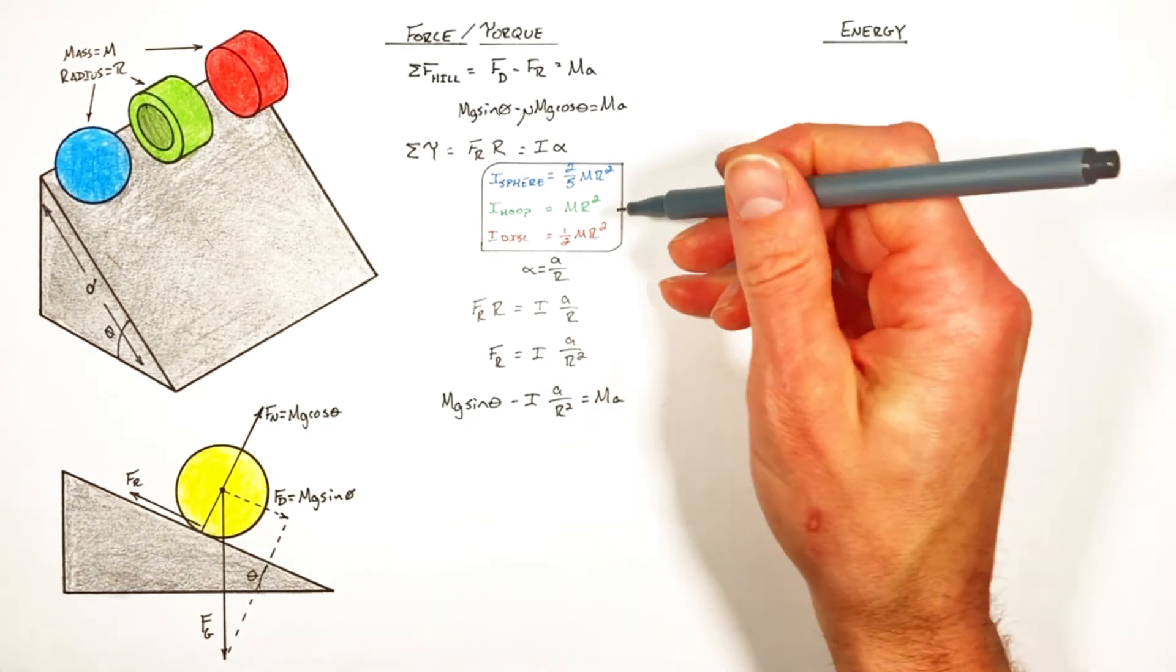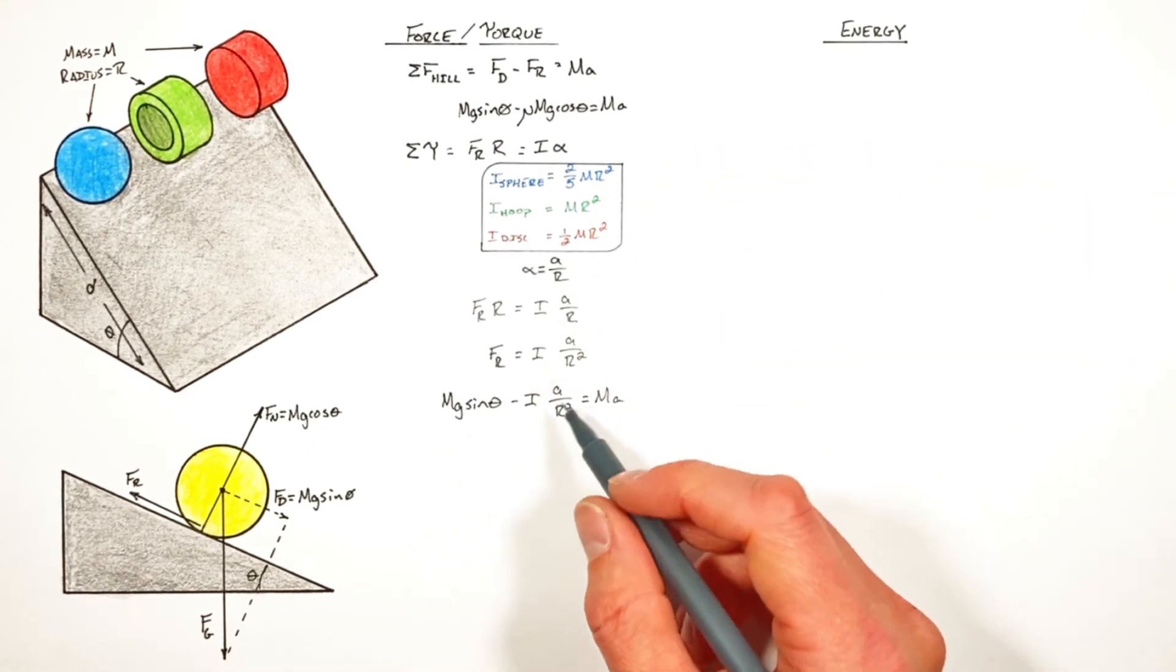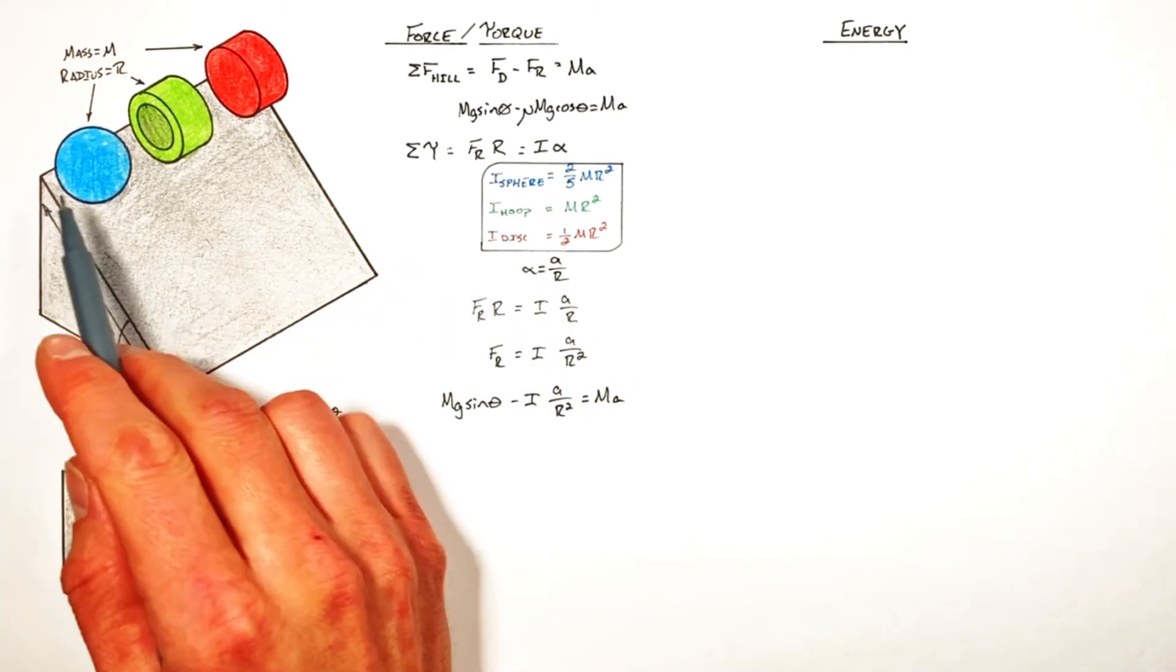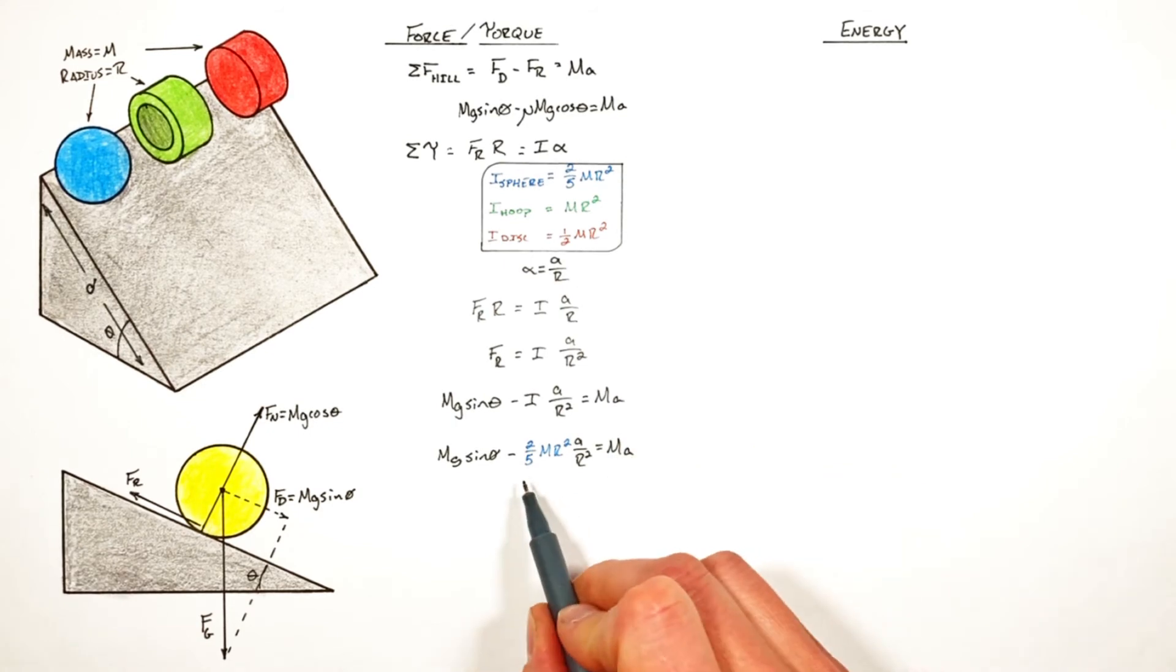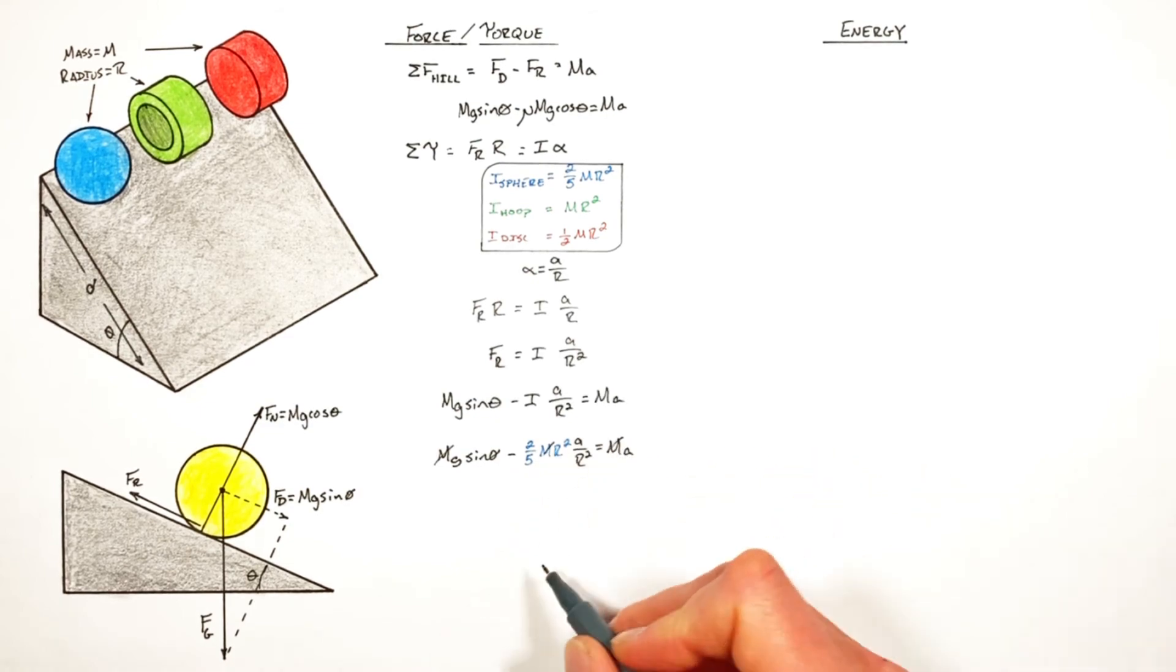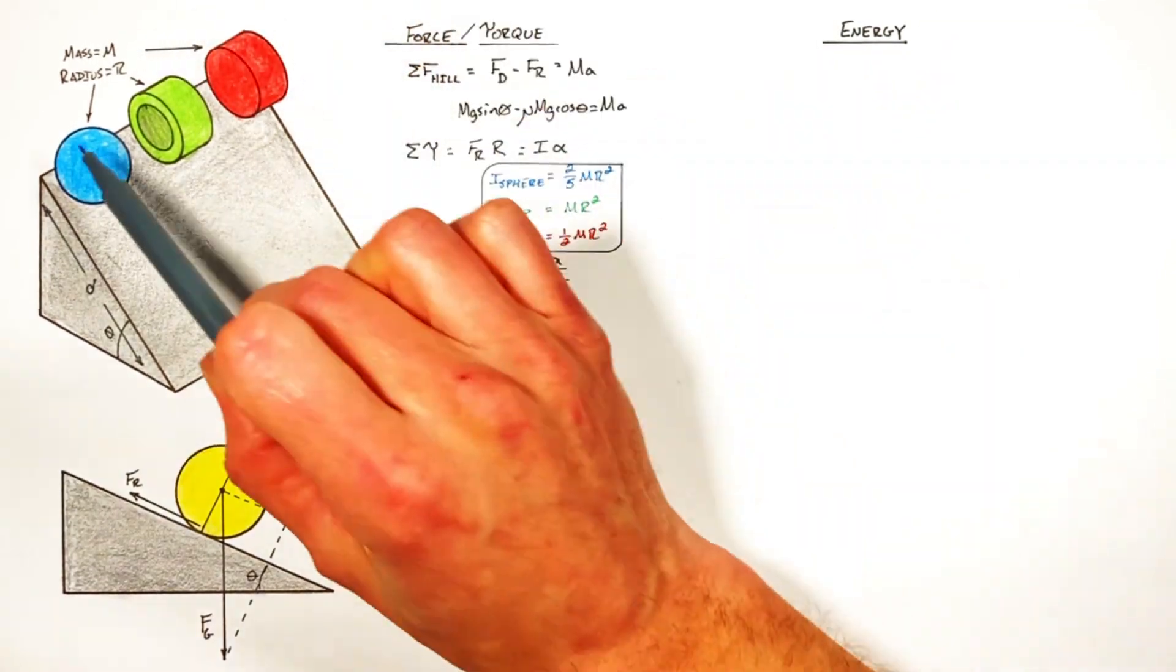So at this point we can plug in the rotational moments of inertia of each of these objects in order to solve for the actual acceleration of each object down the hill. So starting with the sphere. Having substituted in the rotational moment of inertia right here we'll see a whole bunch of stuff cancels out. You'll notice the mass cancels out, the radius cancels out.